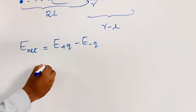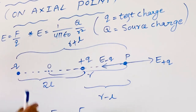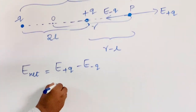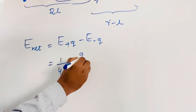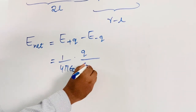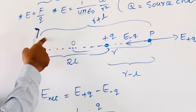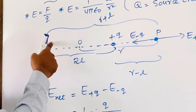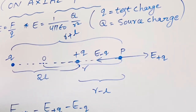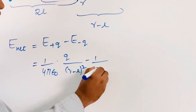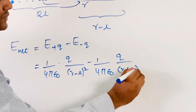What is E due to plus Q? We can use this formula since plus Q is a source charge. We write it as 1 by 4 pi epsilon 0 into Q by (R minus L) whole square. Similarly, E due to minus Q, which also acts as a source charge at distance R plus L from point P, is written as 1 by 4 pi epsilon 0 into Q by (R plus L) whole square.